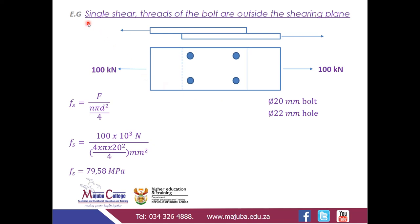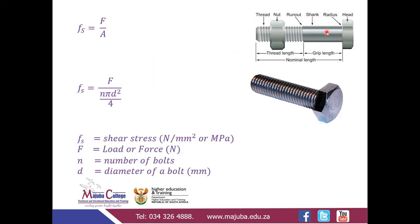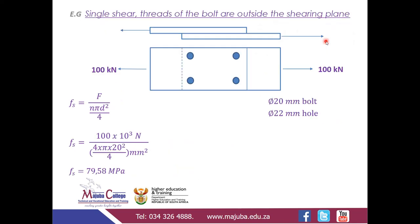Our first example is based on single shear, with the assumption that the threads of the bolt are outside the shearing plane. This means we are using the partially threaded bolt assumption — the shearing plane is where there are no threads.